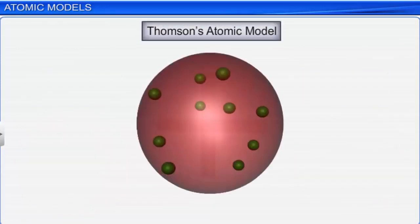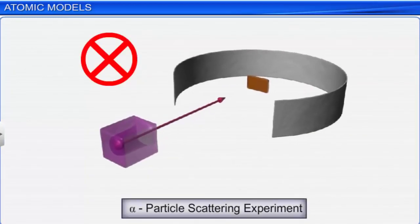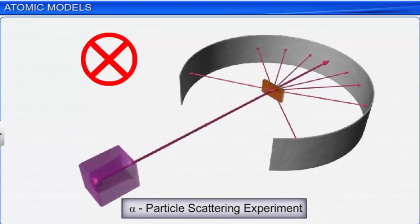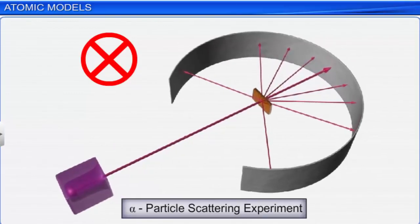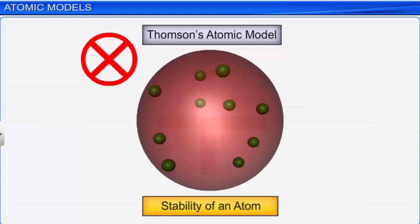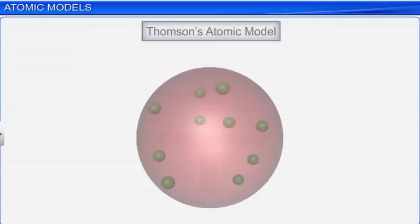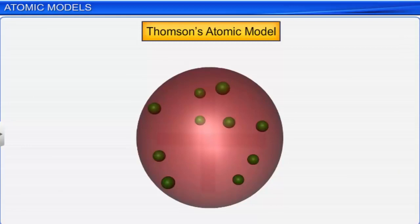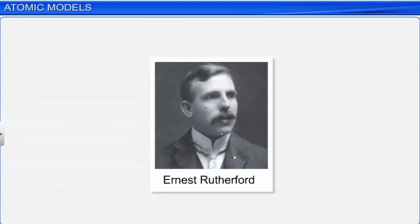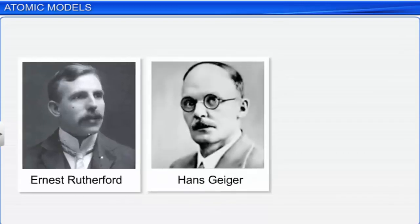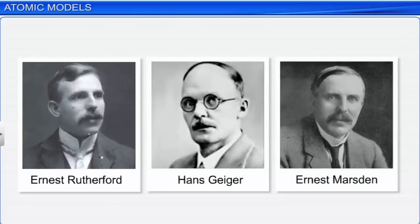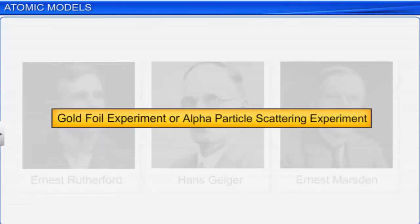Although this model successfully explained the overall neutrality of the atom, it could not explain the results of the scattering experiment conducted by Ernest Rutherford. Also, it could not explain the stability of an atom — i.e., how the positively charged particles are shielded from the negatively charged particles without getting neutralized. In order to validate Thomson's atomic model, in 1911, Rutherford and his students Hans Geiger and Ernest Marsden conducted an experiment called the gold foil experiment or alpha particle scattering experiment.